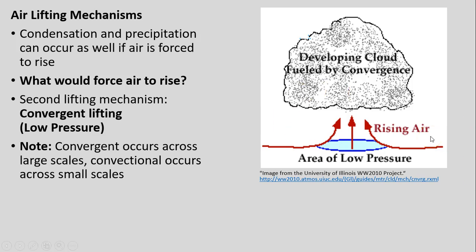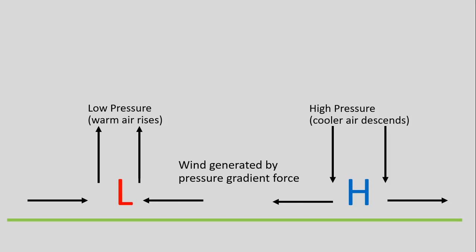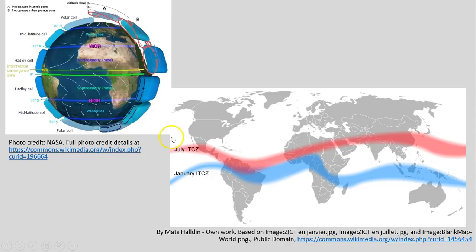With convergent lifting, we've shown examples before: on the left-hand side we have our low pressure with air rising, versus our high pressure where air is descending and adiabatically warming. Focusing on low pressure with convergent lifting, examples include the Intertropical Convergence Zone, which is part of the broader circulation of our cells — the Hadley cell, mid-latitude cell, and polar cells.